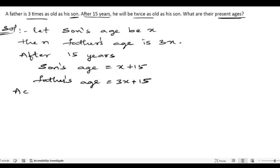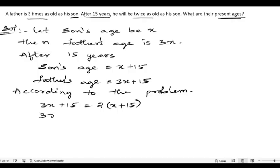According to the problem, father will be twice as old as his son after 15 years. So we write: 3X + 15 = 2(X + 15), which gives us 3X + 15 = 2X + 30.